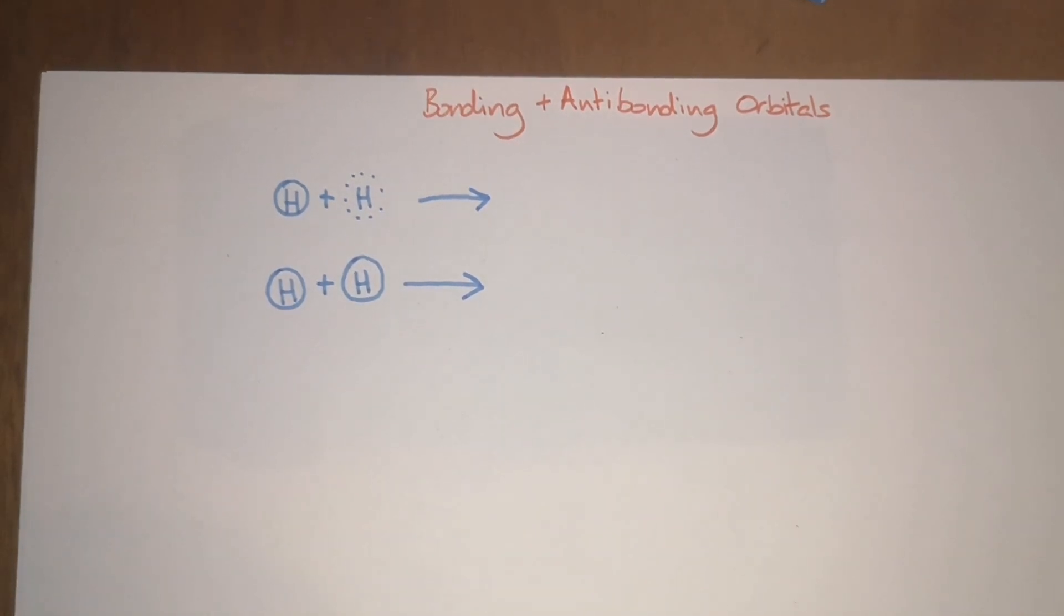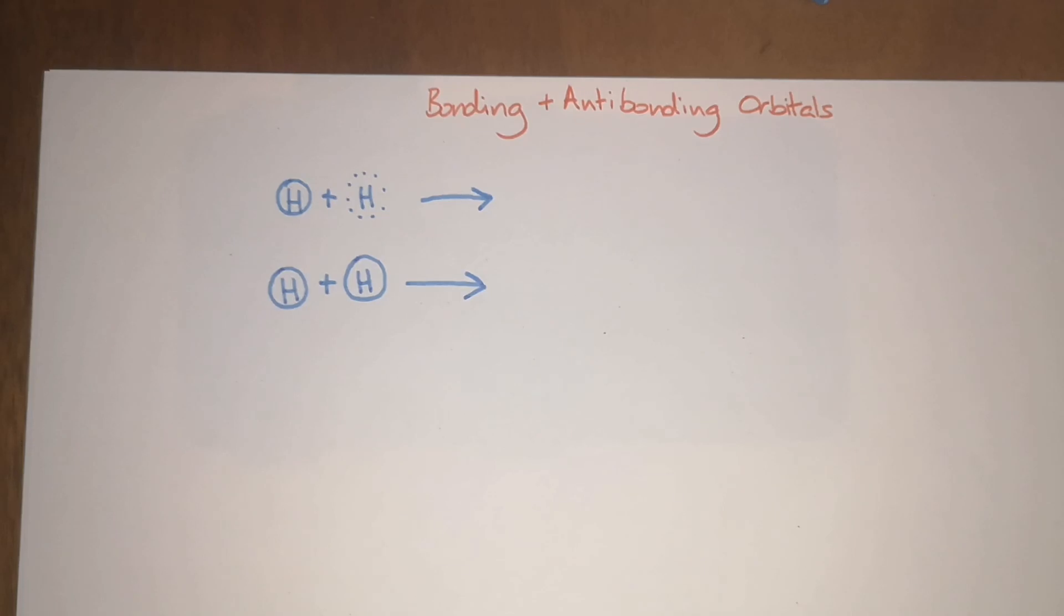Hello again. In this video we're going to be talking about bonding and antibonding orbitals. This follows on from the last video about orbitals and hybridization, but here we'll focus more on the different orbitals that form when you form a molecular bond.